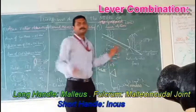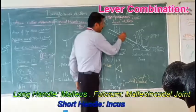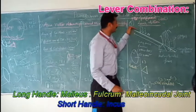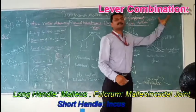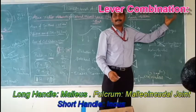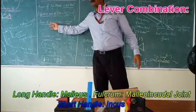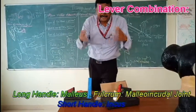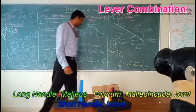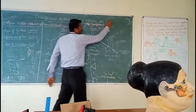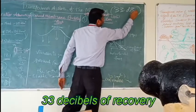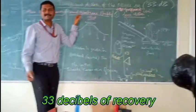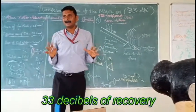The malleus-incus joint is the fulcrum, the manubrium of the malleus is one arm, and the long process of the incus is the other — giving a ratio of 1.3 to 1. The oval window has an area of 3.2 millimetre square. This entire combination acts like a lever providing a boost. The total impedance loss compensated by the combined action of the areal ratio, the curved membrane with buckling effect, and the lever action is 33 decibels.